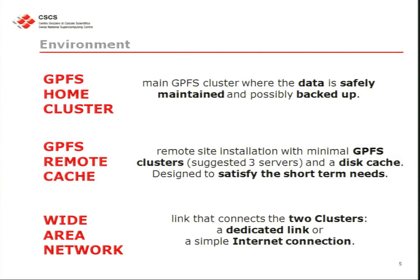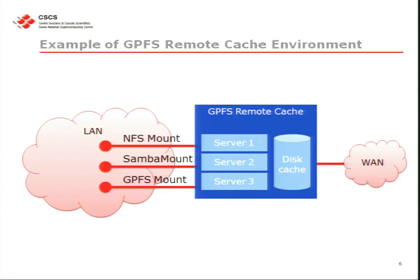In single-writer mode, all the changes you make on the remote cache are propagated to the home cluster, but you are not allowed on the home cluster to do anything to the files — otherwise you lose information. You can list and read, but not modify anything, because any changes you make on the remote will overwrite the data at home. This is a huge limitation. An example: you have your source cluster and then a link, which should be an NFS link.